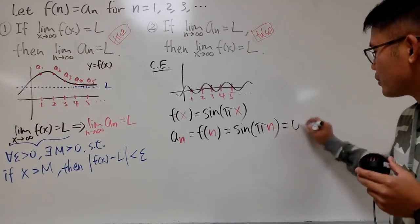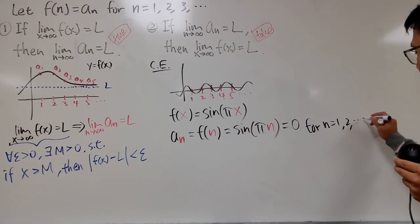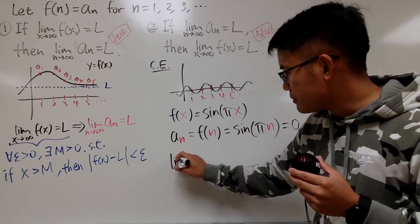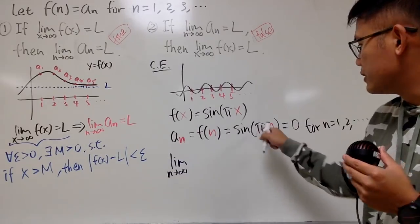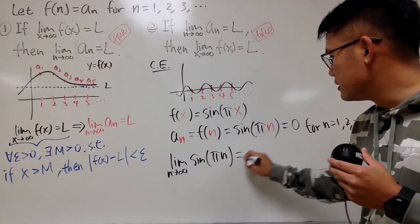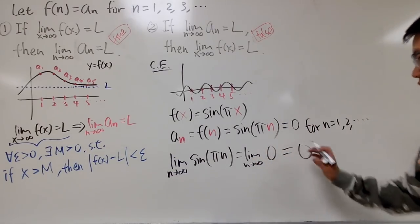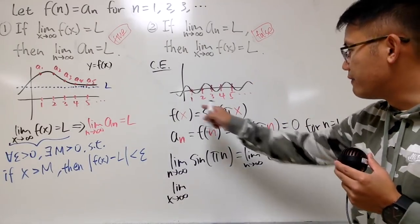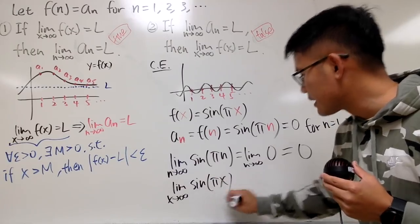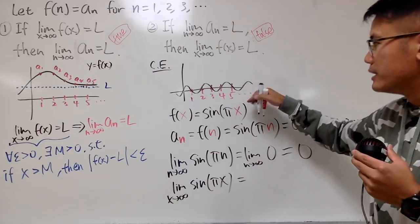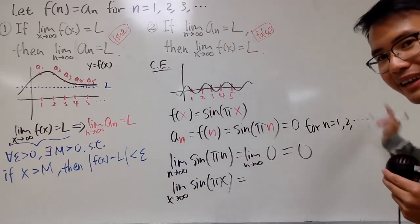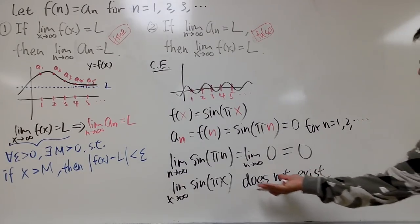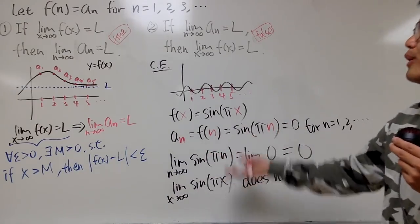So sin(πn) is always 0 for n = 1, 2, 3, 4, 5, and so on. Therefore, the limit as n → ∞ of aₙ = the limit as n → ∞ of sin(πn) = the limit as n → ∞ of 0 = 0. But if you take the limit as x → ∞ of f(x) = sin(πx), this is always between −1 and 1, going up and down, up and down. This limit does not exist. So the limit of the sequence and the limit of the function don't match — this is a great counter-example showing Statement 2 is false.